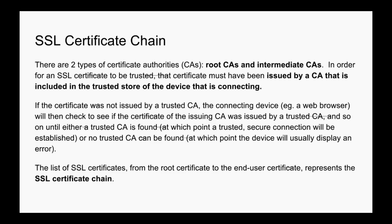There are two types of certificate authorities out there: Root CAs and Intermediate CAs. In order for an SSL certificate to be trusted, that certificate must have been issued by a CA that is included in the trusted store of the connecting device. That means the certificate must be trusted by one of the Root CAs present in your browser.